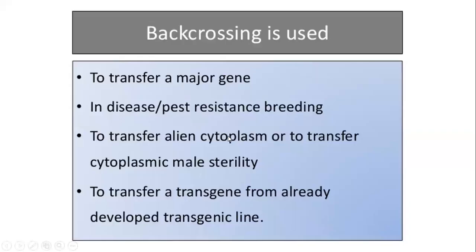Back crossing is used mainly to transfer a major gene in cases of disease or pest resistance. It can also be used to transfer alien cytoplasm or to transfer cytoplasmic male sterility — a property situated in the organelle genome that can be passed into another target plant. Back crossing can also be used to transfer a transgene from an already-developed transgenic plant line.